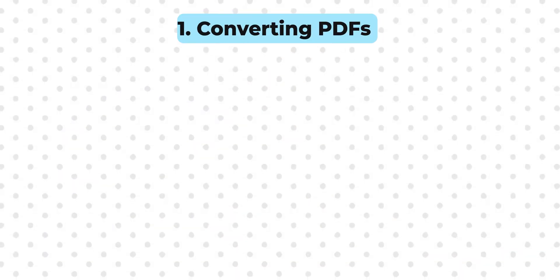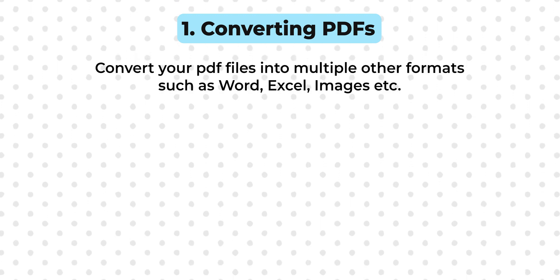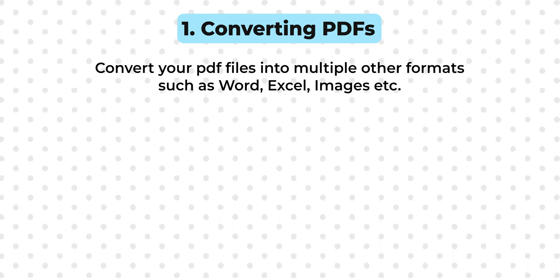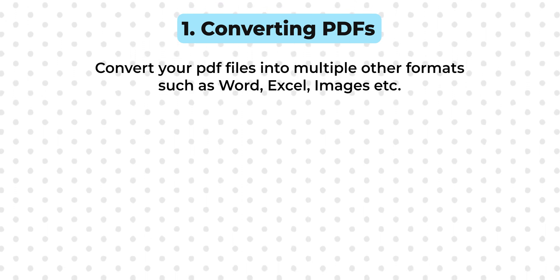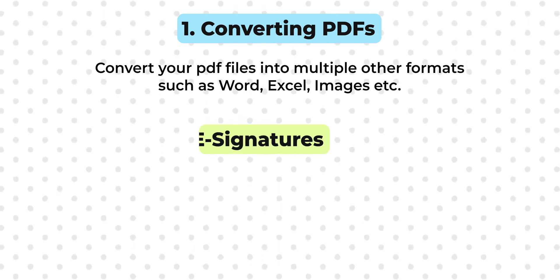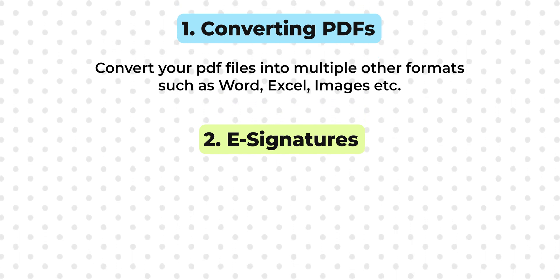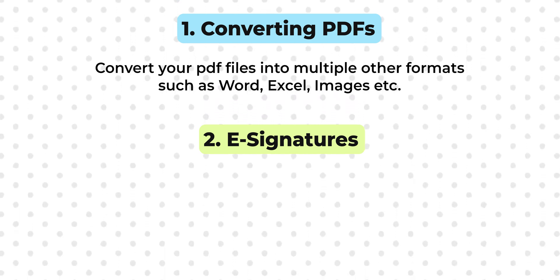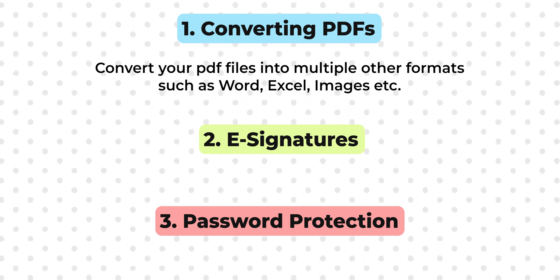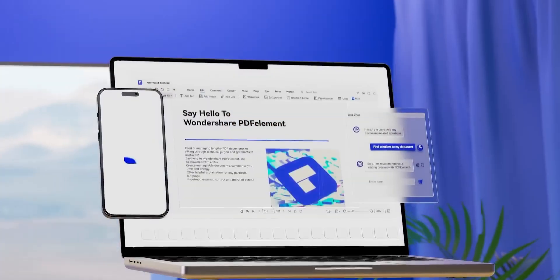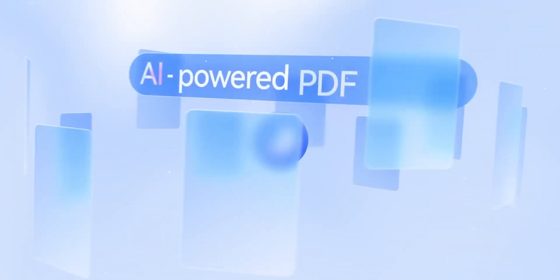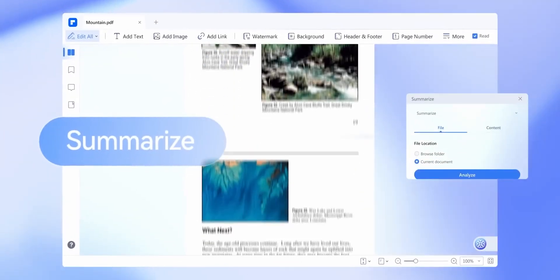Some other features included in these apps are converting — you can convert your PDF files into any format you like, such as Word, PPT, Excel, image, and much more. Second, you can add your e-signature, which is something we often have to do on a daily basis. Password protection is also there, so we can add passwords to our PDF files. Last but not least, a feature that only PDF Element has is AI functionality — this app can scan your PDF and then you can ask it to summarize it, rewrite content, and answer questions.